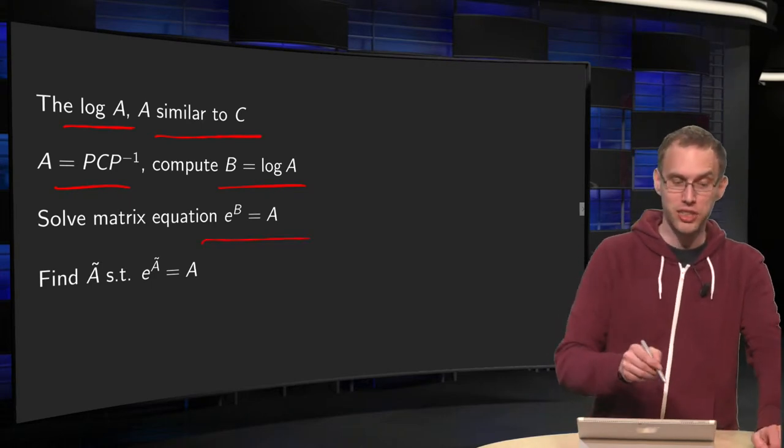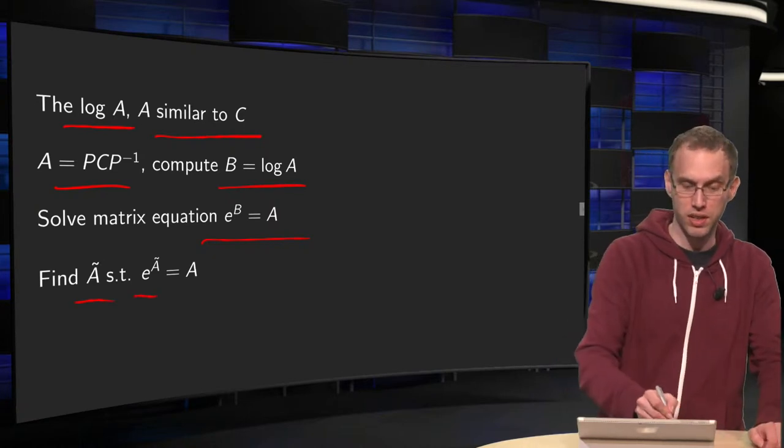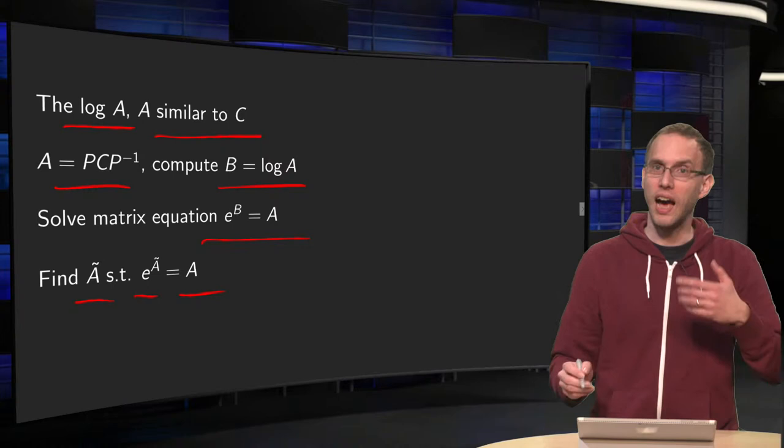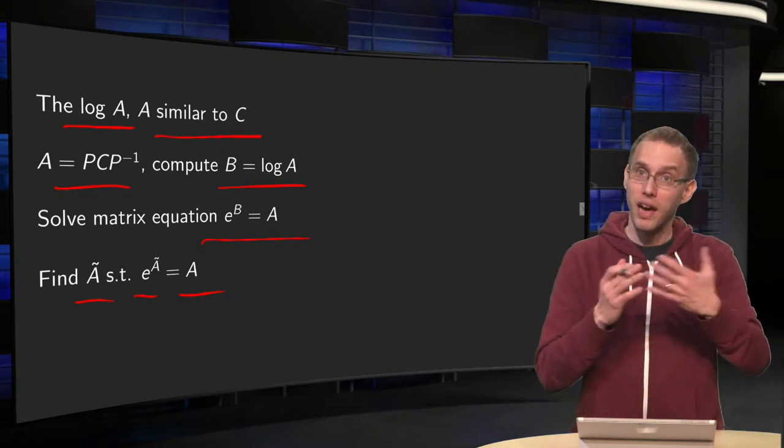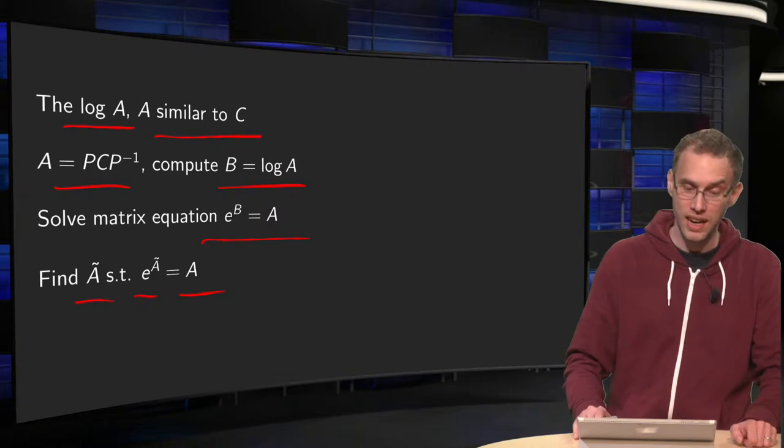And the easiest way to do that is to find some Ã such that e^(Ã) = A, and you do this by looking at how A looks of course, and that gives you some clues how to find your Ã.